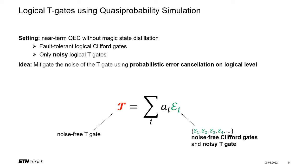The setting we're considering is a near-term quantum error correction system which doesn't support magic state distillation — so we can realize Clifford gates fault-tolerantly but cannot realize the T-gate fault-tolerantly; we can at most have some kind of noisy logical T-gate. The central idea of our technique is extremely simple in principle: we take one of these noisy logical T-gates and error-mitigate the noise away using probabilistic error cancellation, but now at the logical level. To do that, we first need to find a quasi-probability decomposition of our ideal noise-free T-gate in terms of operations our hardware can realize — noise-free Clifford gates and a noisy logical T-gate.